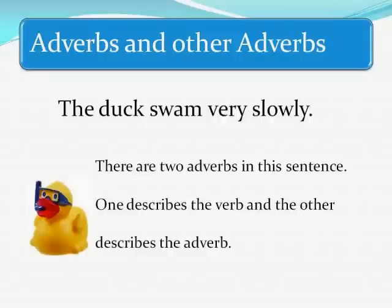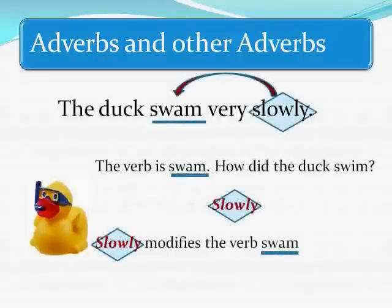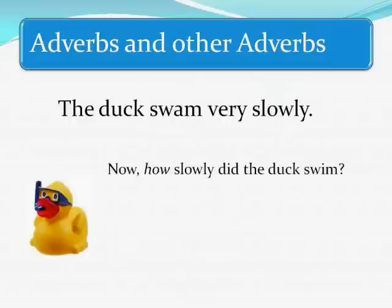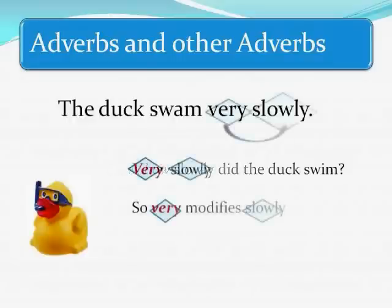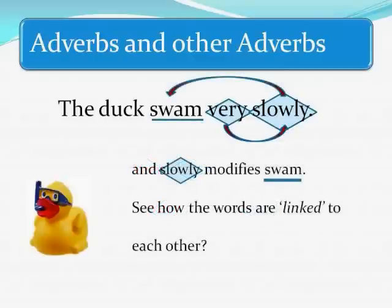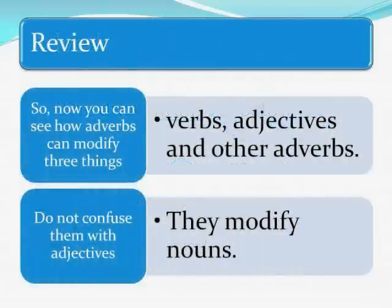Adverbs and other adverbs — 'The duck swam very slowly.' There are two adverbs in this sentence: one describes the verb and the other describes the adverb. The verb is 'swam.' How did the duck swim? Slowly. 'Slowly' modifies the verb 'swam.' Now, how slowly did the duck swim? Very slowly. So 'very' modifies 'slowly,' and 'slowly' modifies 'swam.' See how the words are linked to each other.